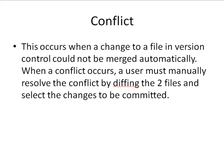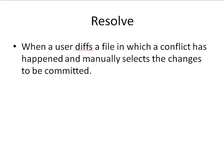What is going to happen is the version control system is usually going to create two different versions of the file that have conflicted with each other, and you're going to have to take those two files and manually diff them to see which changes you want to actually commit and which changes you want to discard. There are tools that make diffing files easier, and we'll take a look at those when we get into it. Once you diff the two files and select the changes you want to commit to the repository, that's the act of resolving a conflict — when a user diffs a file in which a conflict has happened and manually selects the changes to be committed.